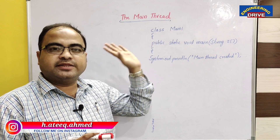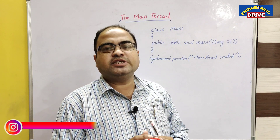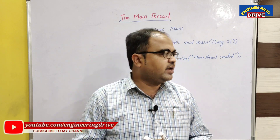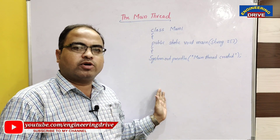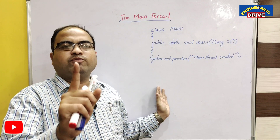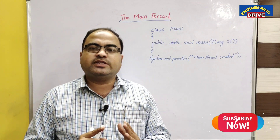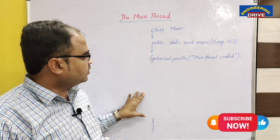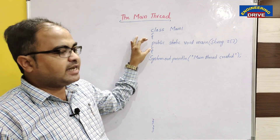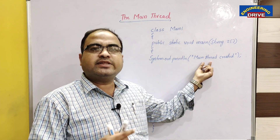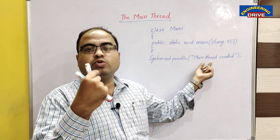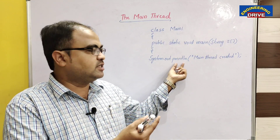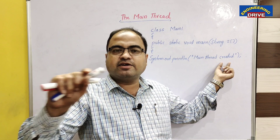I am talking about the main thread. The main thread is a thread which is created whenever a Java program is written. Whenever a user creates a simple Java program, in every Java program one thread is created automatically. The name of that thread is the main thread. So whenever you write a class and main method, automatically one thread will be created.